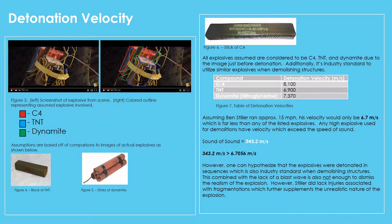Next, we further looked into the detonation velocity by examining the explosives used and comparing them to the speed at which Ben Stiller ran. In the brief moment in which we saw the explosive itself, we were able to narrow down the explosives to three possible compounds: C4, TNT, and dynamite. We based this assumption on their resemblance to real-world explosives and what would commonly be used to destroy a bridge.